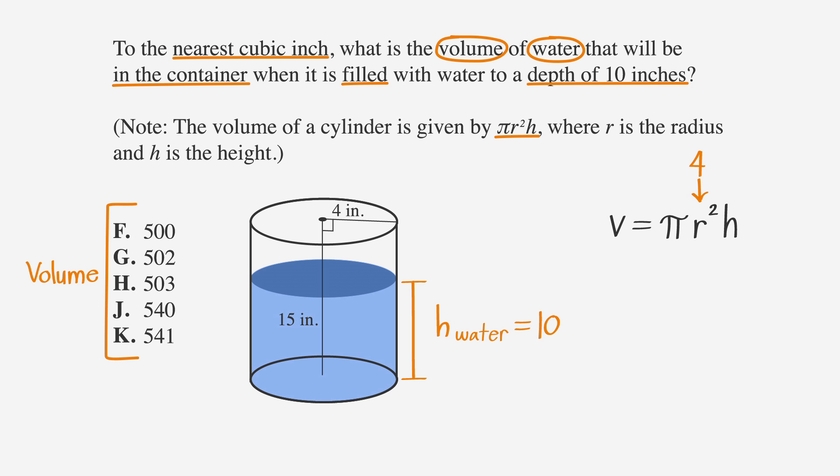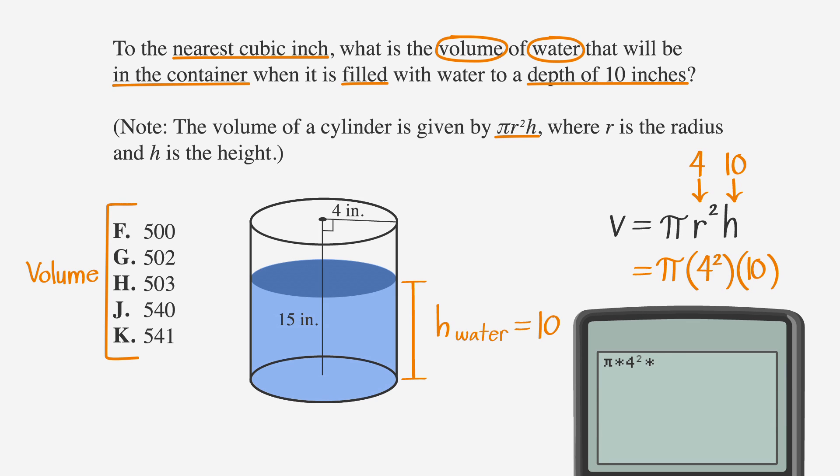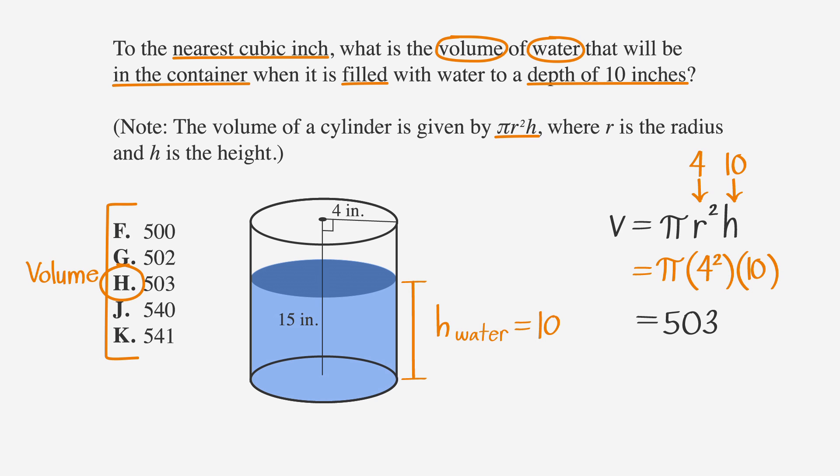Plugging four in for the radius and ten in for the height of the water, we get pi times four squared times ten, which using our calculator we find is 502.654. We need to round this number off to the nearest cubic inch. Since the tenth digit is six, we'll round the unit's digit up, giving us 503, which is our final answer, choice H.